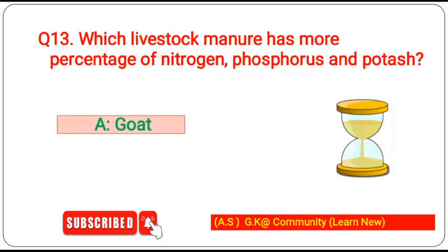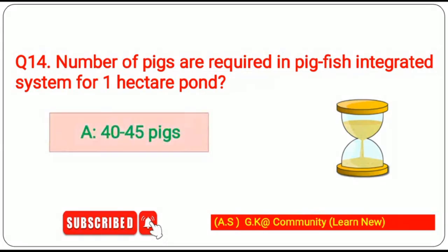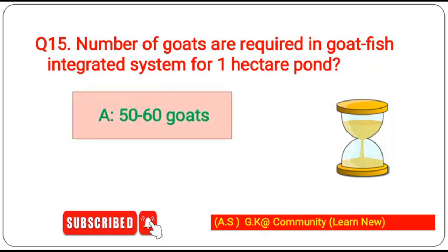Fourteenth question: number of pigs required in a pig-fish integrated system for one hectare pond — the answer is 40 to 45 pigs. Fifteenth question: number of goats required in a goat-fish integrated system for one hectare pond — the answer is 50 to 60 goats.